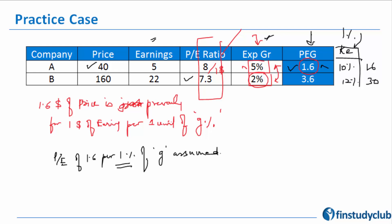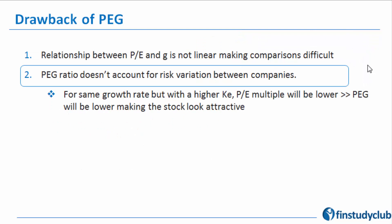But it becomes one of the limitations of PEG that it does not take into account the cost of equity. That's where this particular aspect comes into picture—the risk variation, the cost of equity variation. And again, the same point that you can always further that down with whatever number you have.